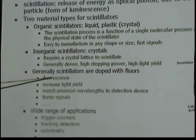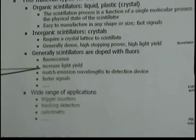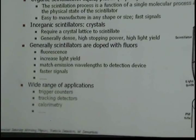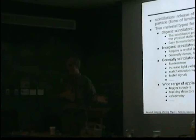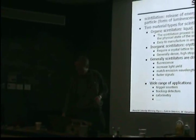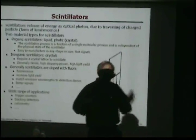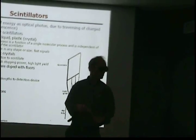And these scintillators are generally doped with fluids, so you can increase the light yield and you can match the wavelength to the wavelength of your detector. So, you know, maybe you have a detector that's more for blue light than for green light, so you can dope it so you shift the wavelength to the green.